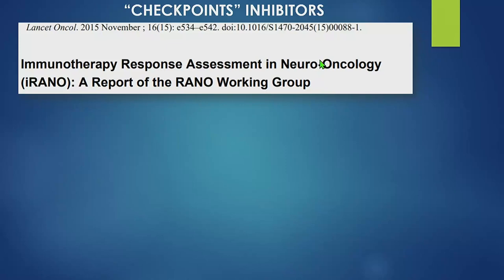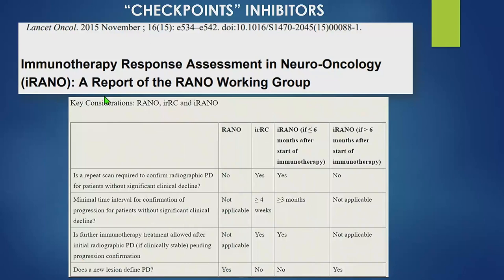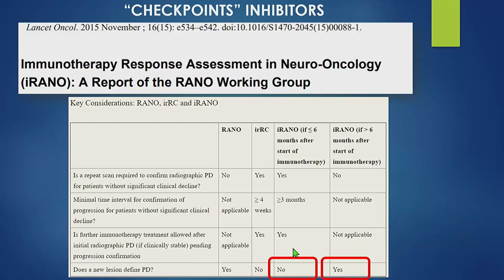Because of this, the RANO criteria were modified to the iRANO — i for immunotherapy. A very important item: does a new lesion define progressive disease? In the standard RANO criteria, yes — a new lesion defines progressive disease. But in the iRANO criteria, if the lesion appears after six months of starting immunotherapy, yes, it's progressive disease. However, during the first months of treatment, we have to be extra careful, as it can be an imaging finding attributable to immunotherapy, and we need three-month imaging confirmation of worsening before calling it progressive disease.